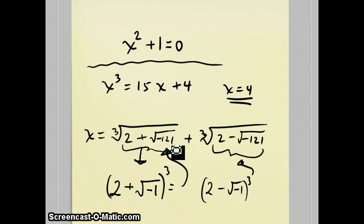So if we're allowed to do that, then this x actually becomes 2 plus the square root of negative 1 plus 2 minus the square root of negative 1. And conveniently, those square root of negative 1s cancel out and you end up with 4, which is the original answer to the question.